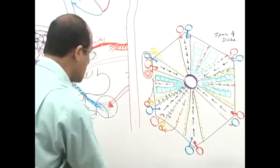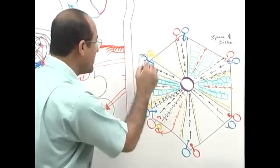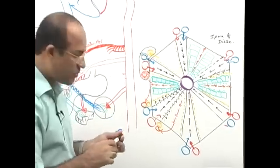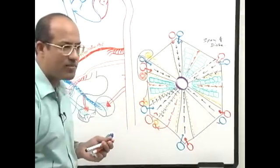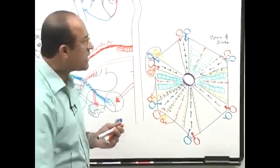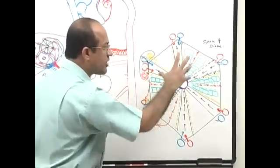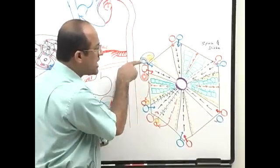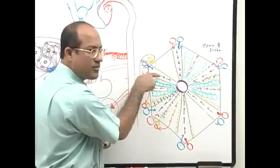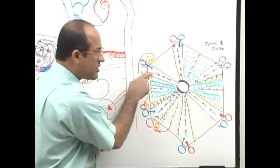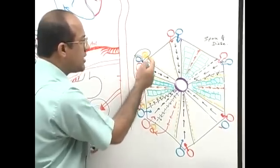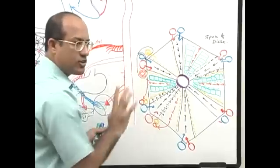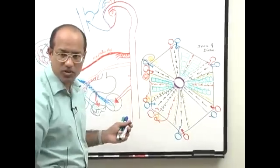Later on, it was recognized that it is not portal triad but portal tetrad, or simply we call it the portal area. At the outer corners of the hexagonal lobules we have portal areas. In every portal area we have portal vein input, hepatic arterial input, lymphatic drainage, and bile duct drainage.